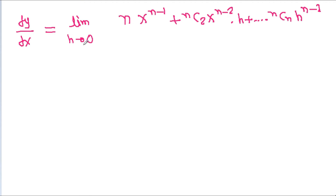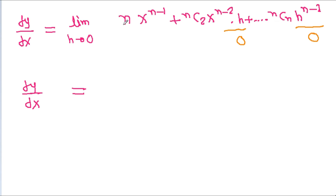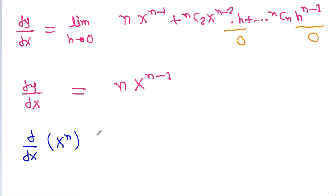Now as h tends to 0, every term containing h will become 0. So all terms after the first vanish, and we get dy by dx equal to n times x to the power n minus 1. Since y equals x to the power n, we conclude that d by dx of x to the power n equals n times x to the power n minus 1, which is the required proof.